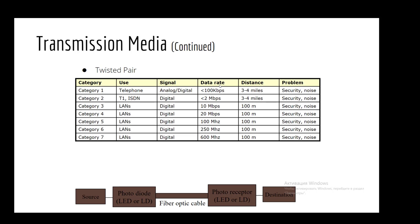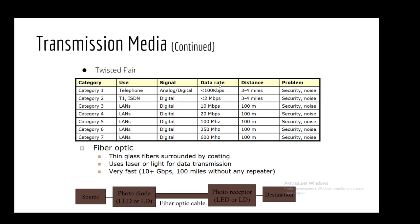Next transmission media. Here in the table you can see its use, signal, data rate, distance, and problem. And the next section is fiber optic. It has following properties. First, it's thin glass fibers surrounded by coating. Uses laser or light for data transmission. And the last, very fast. It means that it's 100 miles without any repeater.